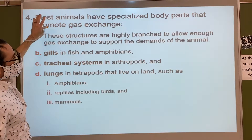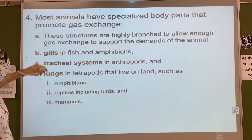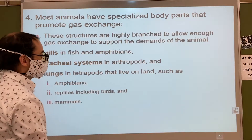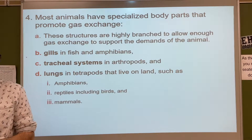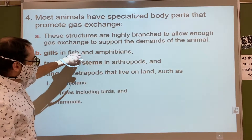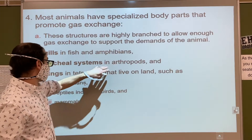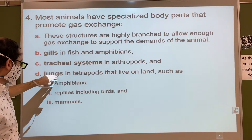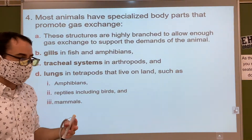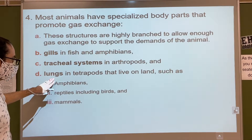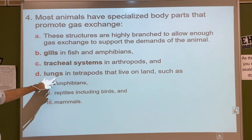Most animals have specialized body parts that promote gas exchange. These structures are highly branched to allow enough gas exchange to support the demands of the animal. More complex organisms include fish and amphibians, which have gills; insects or arthropods, which have tracheal systems; and tetrapods — which includes us, meaning four limbs — they have lungs. Anything that lives on land and is a tetrapod is going to have lungs.